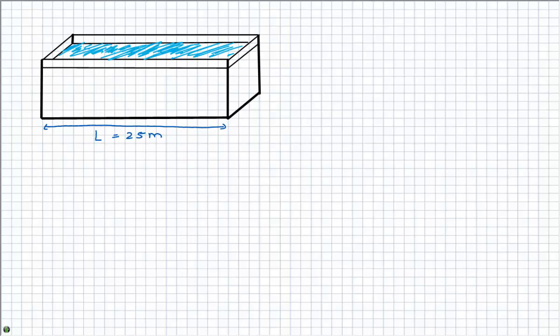We can think of the swimming pool as just a box with some water in it. We have a certain length, a certain width and a certain height, which I will draw right in here.